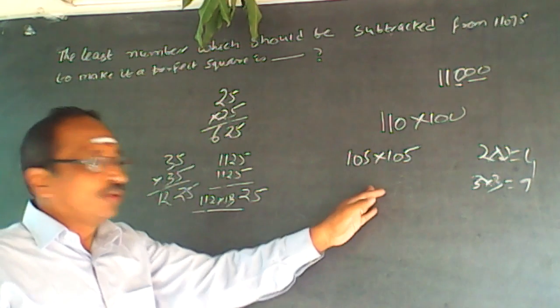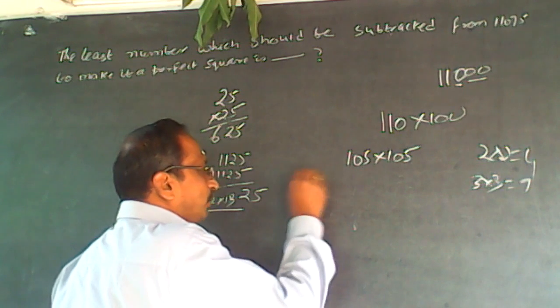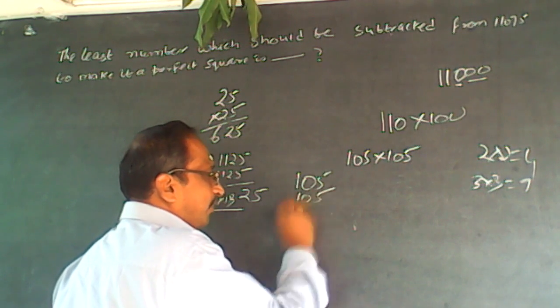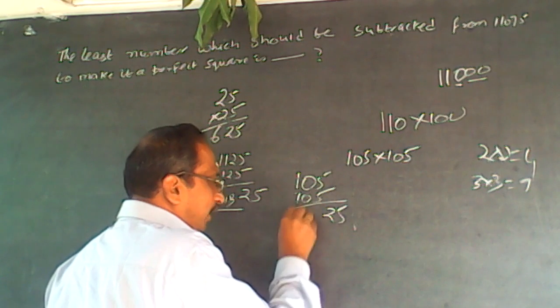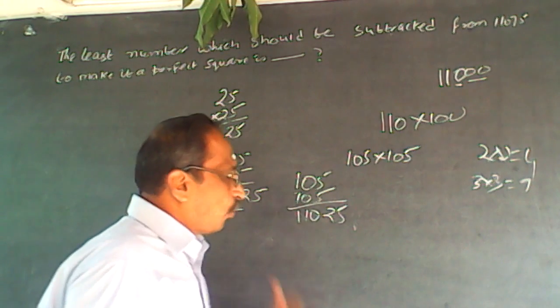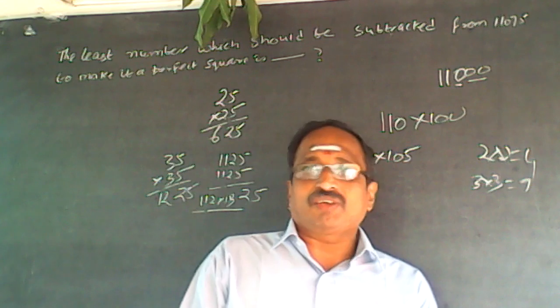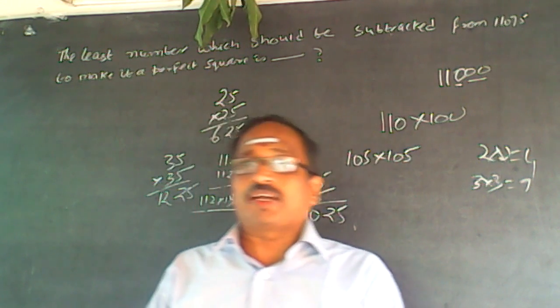I can apply the same rule here. So 105 into 105. So 5 times 5 is 25. Remaining number is 10, 10 into 11 is 110. So 11025 is a perfect square.